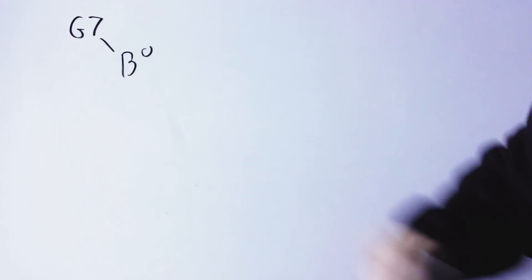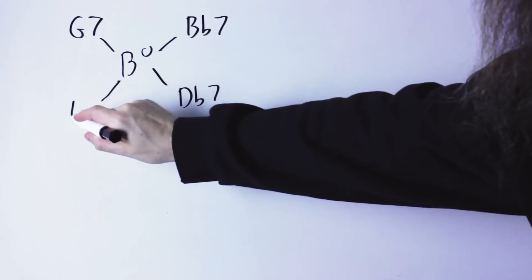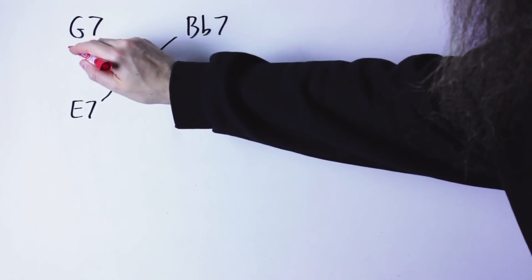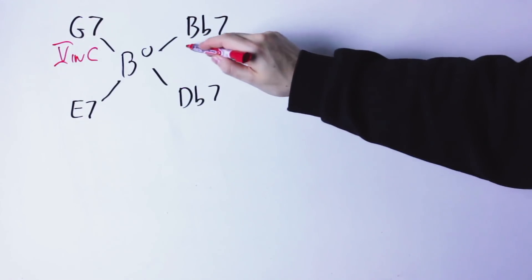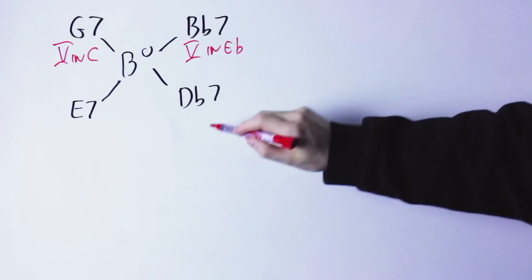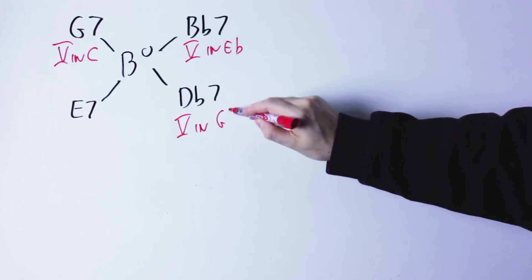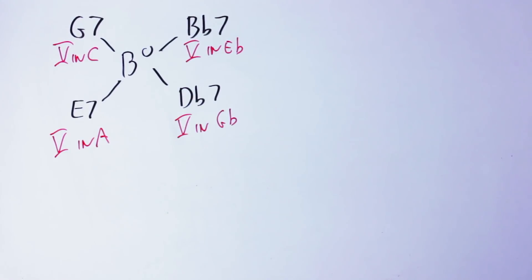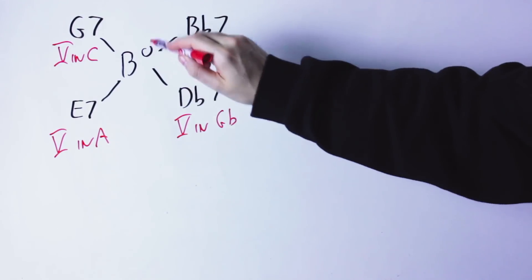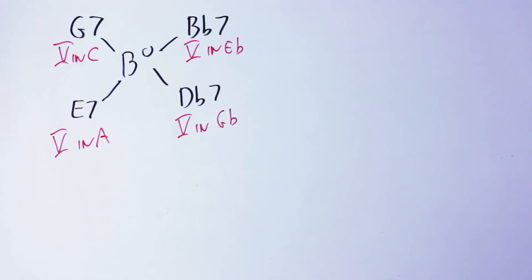So all this means that one diminished chord is very similar to four different dominant seventh chords. The G seventh chord is the fifth chord in the key of C, the B flat seventh chord is the fifth chord in the key of E flat, the D flat seventh chord is the fifth chord in the key of G flat, and the E seventh chord is the fifth chord in the key of A. So this B diminished chord — which can also be called the D diminished, F diminished, or A flat diminished chord — works as a bridge between all those keys.